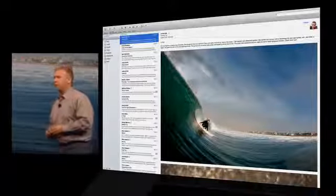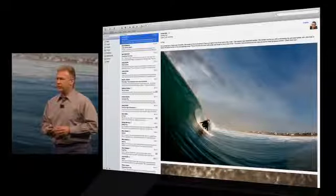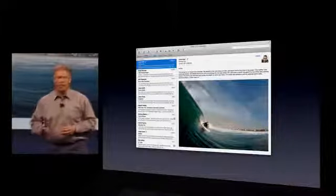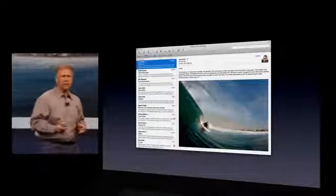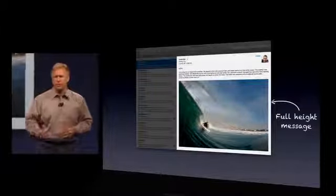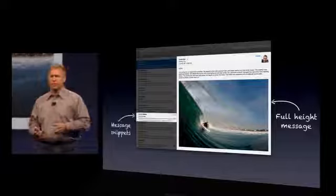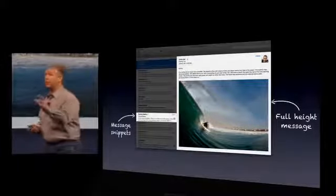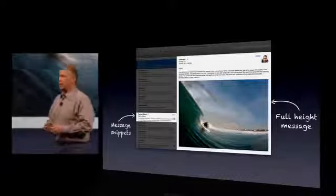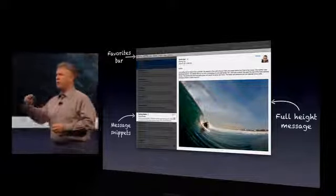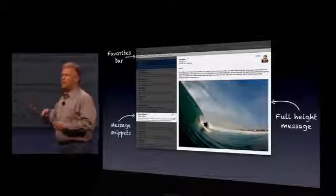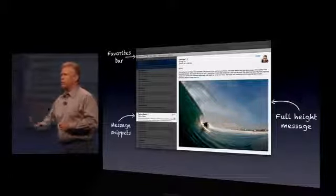Mail features a three-column view right there on the left, and the design is really optimized around reading your mail. You have a beautiful full-height message window, and in the message list you see snippets, like we used to from iOS, now built into Mail. Across the top you have a favorites bar, sort of like a browser does, in Mail — that can be favorite folders you want to get at quickly.